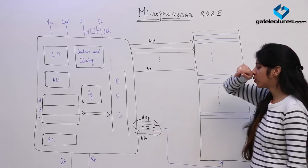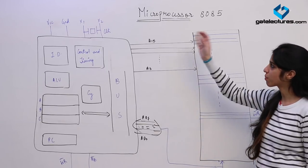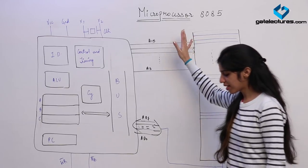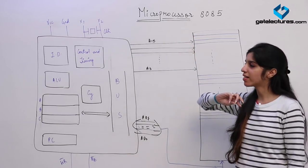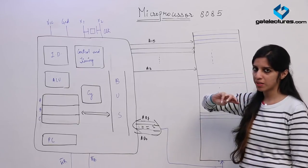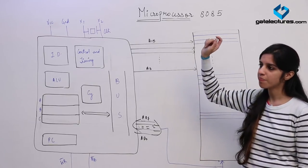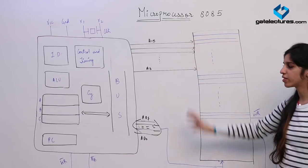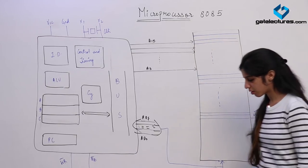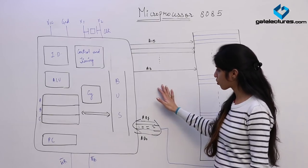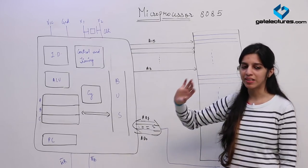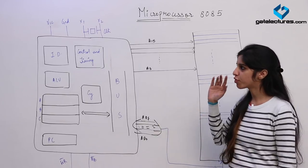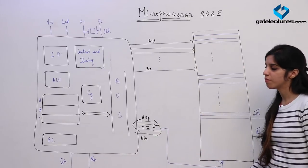Hello everyone. Today we are going to look at a new subject which is microprocessor 8085. In microprocessors, they ask about two microprocessors mainly — 8085 and 8086. Some topics of 8085 are also in 8086, so you can study one microprocessor completely and then study the other by relating it. We are starting with microprocessor 8085.